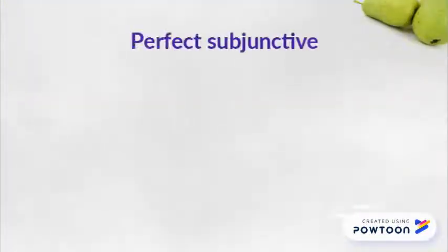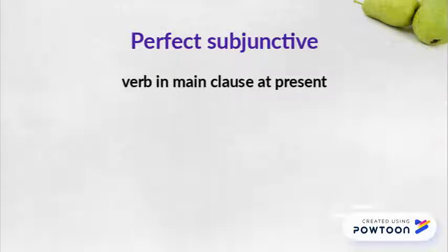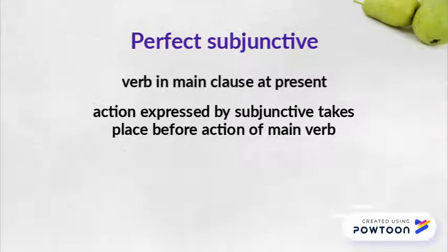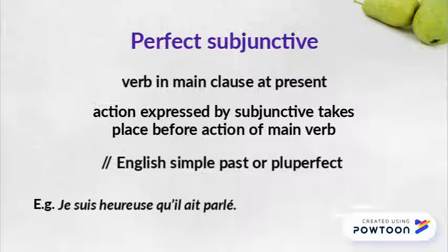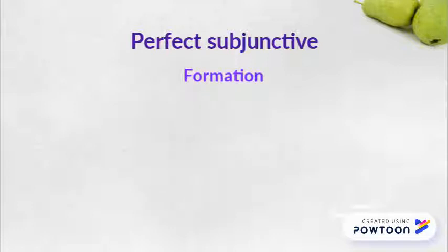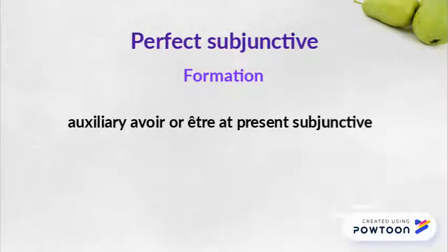You use the perfect subjunctive when the verb in the main clause is at the present and the action expressed by the subjunctive takes place before the action expressed by the main verb. It corresponds to the English simple past or pluperfect. For instance, 'je suis heureuse qu'il ait parlé' means 'I am happy that he spoke up.' You form it like any compound tense, with the auxiliary avoir or être at the present subjunctive, followed by the past participle of the verb.